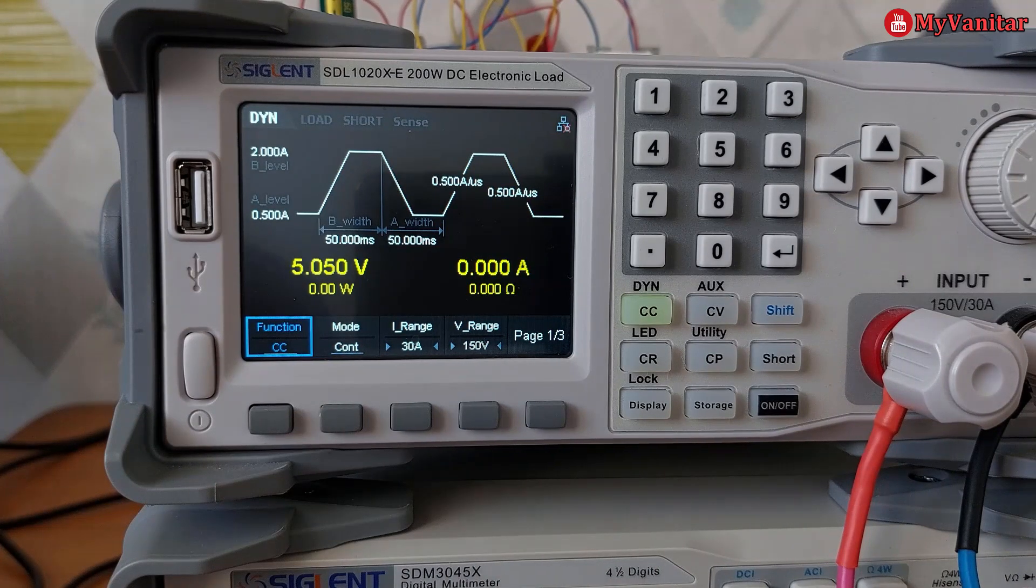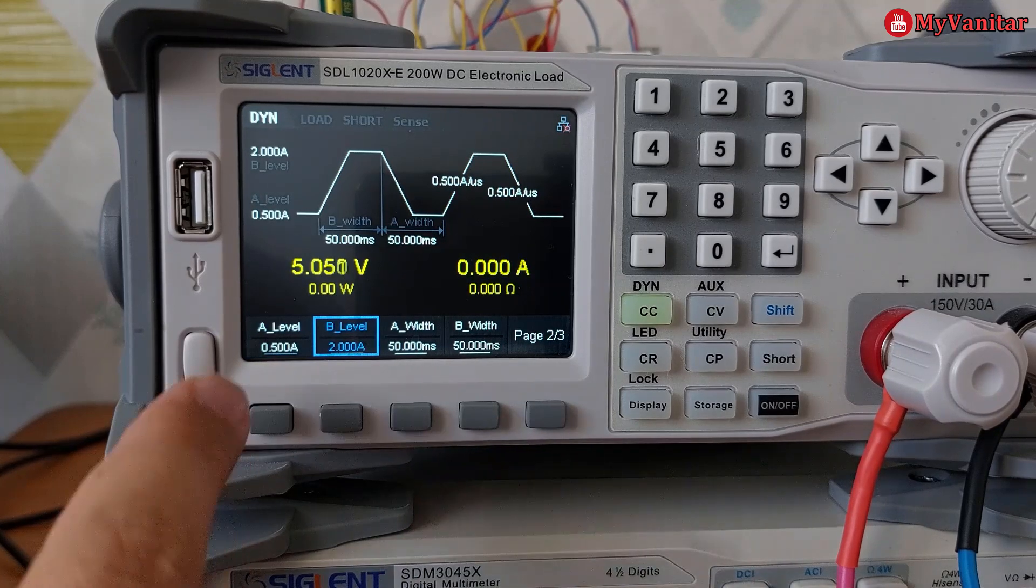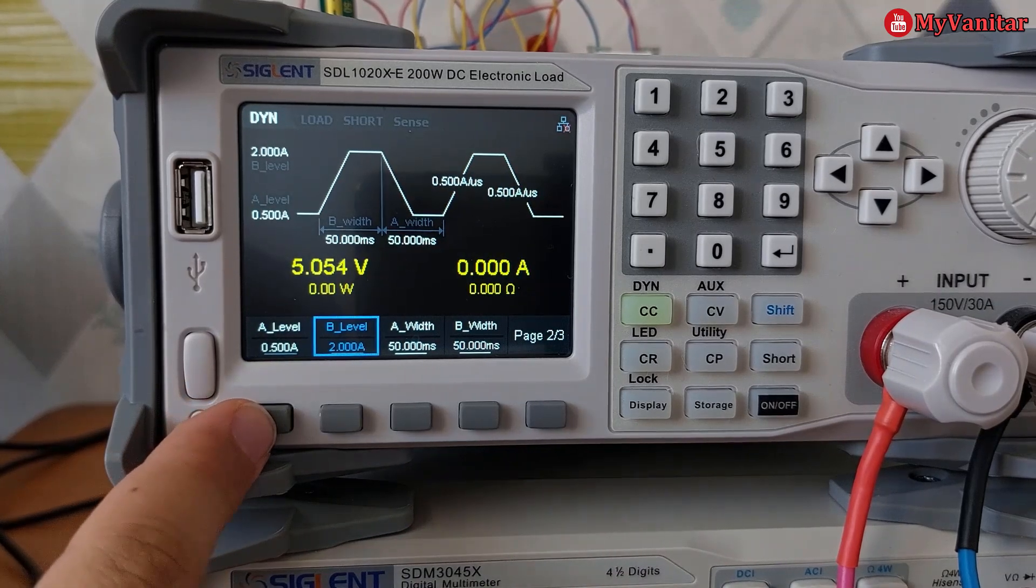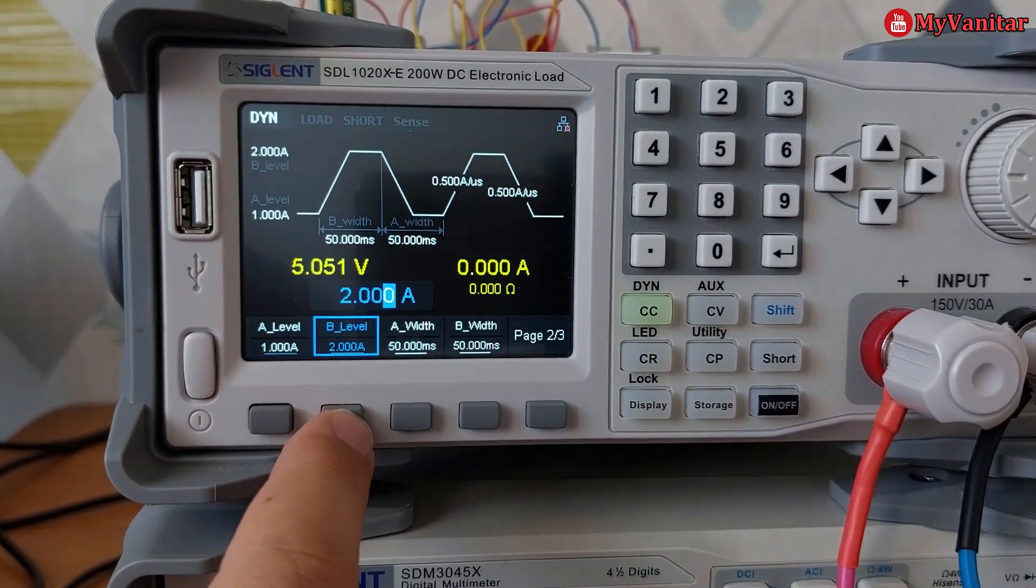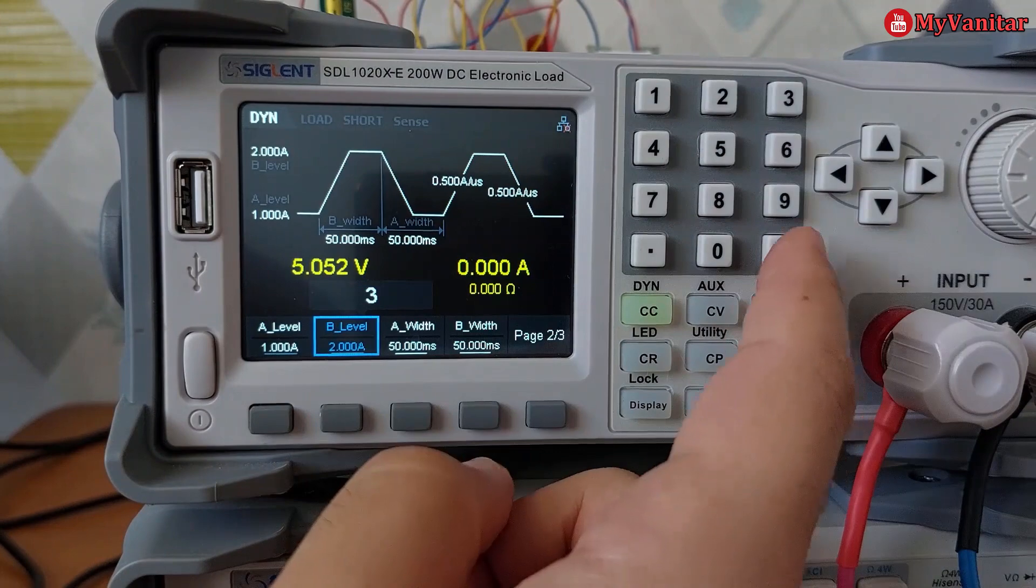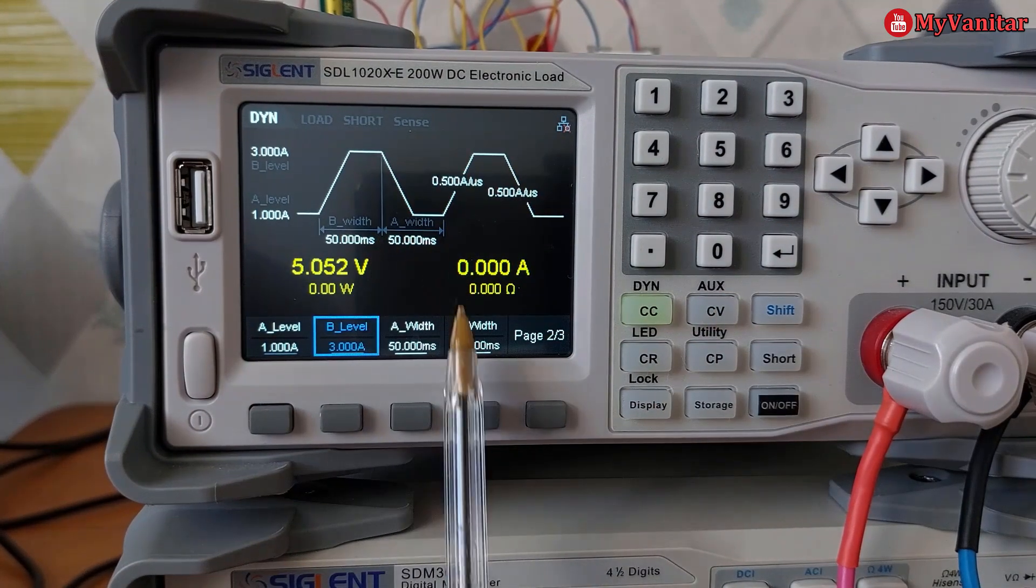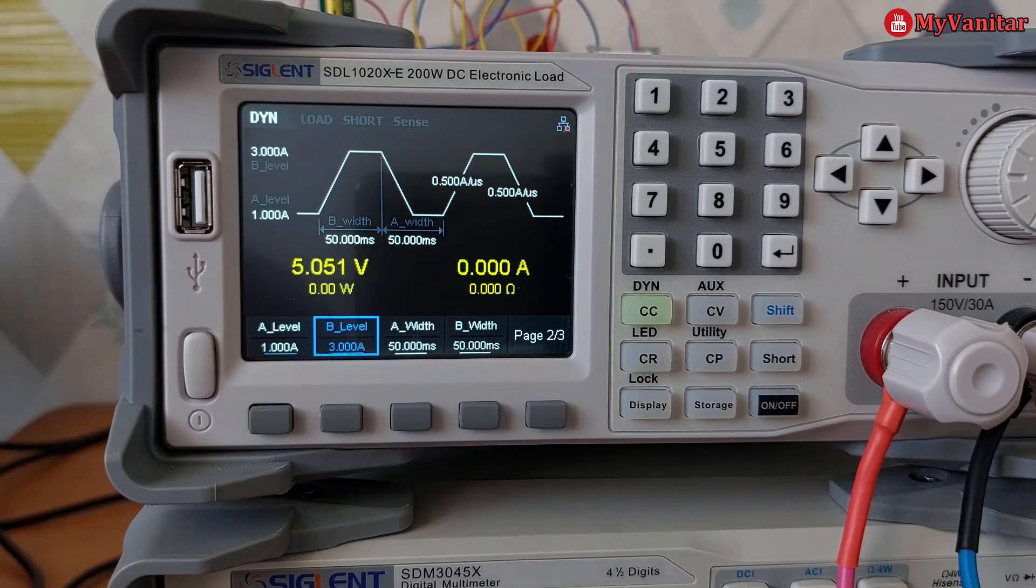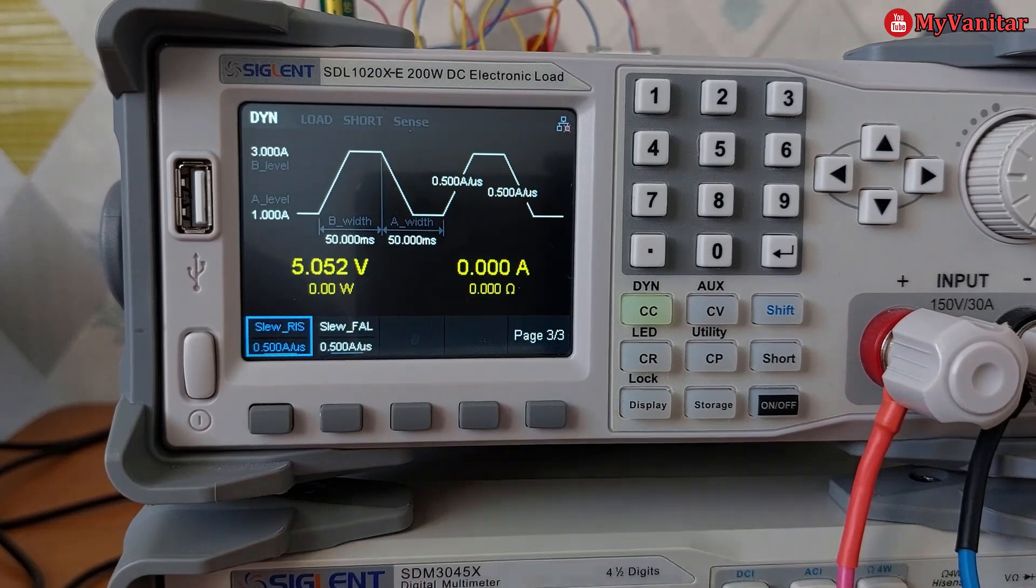Let's go to the next page. A level, the lower current level, should be 1 amp, and B level, the high current level, should be 3 amps. We're going to generate a square current pulse.